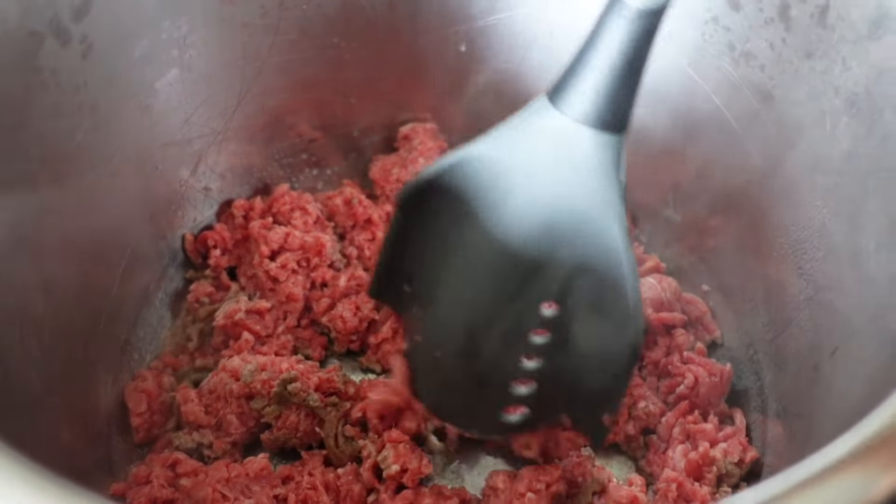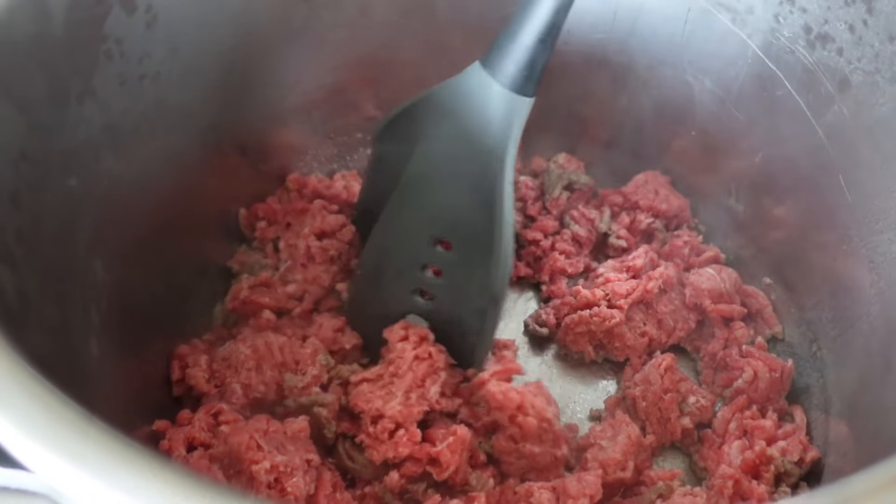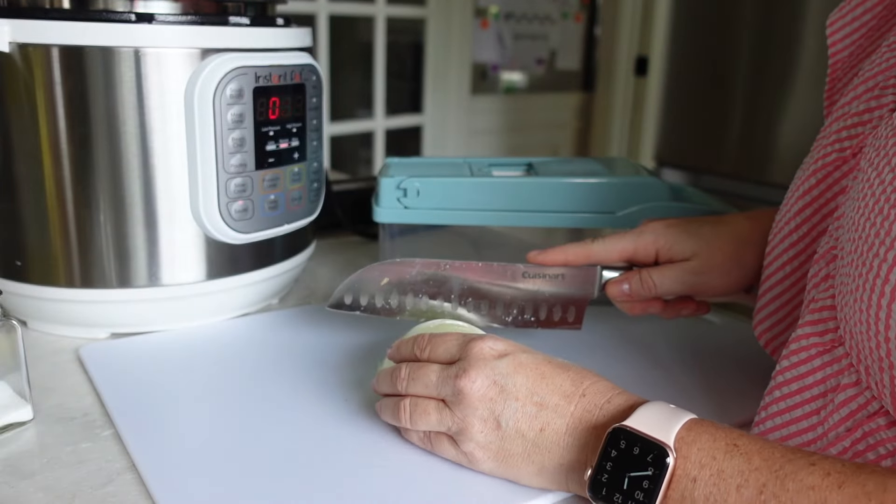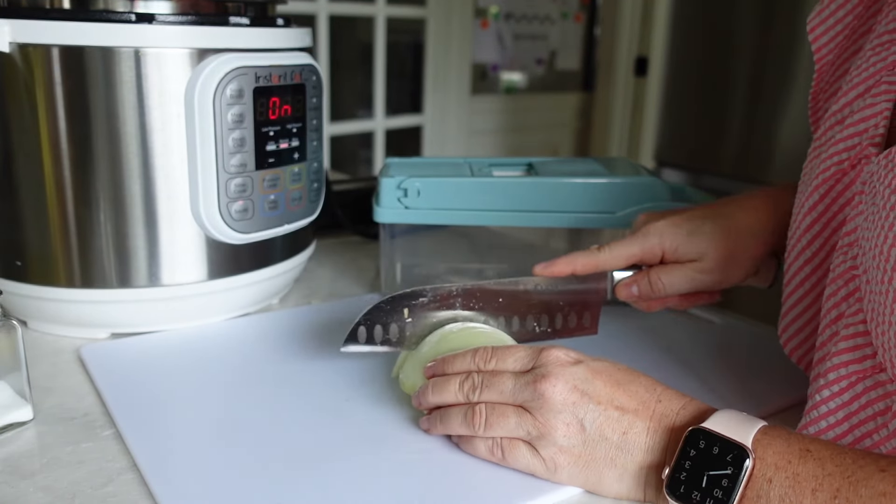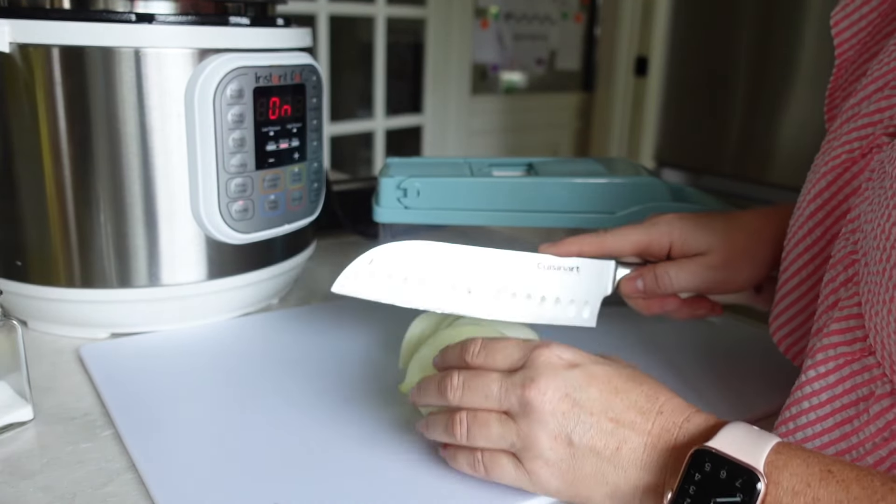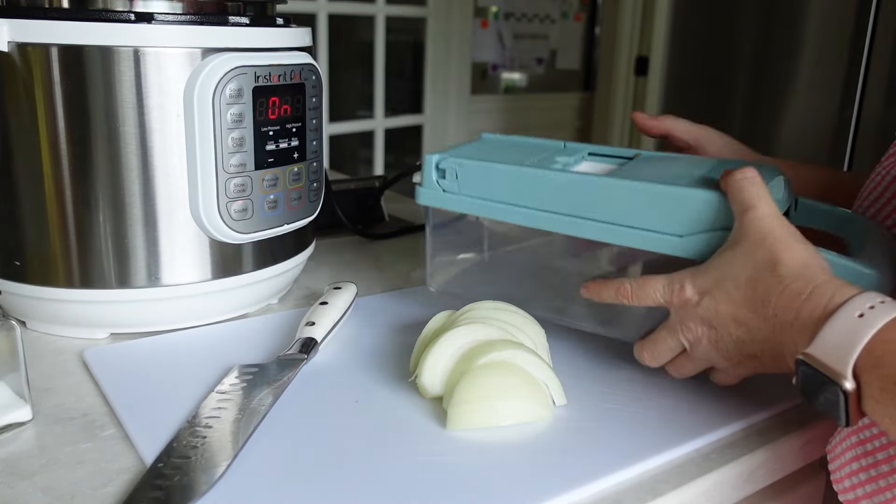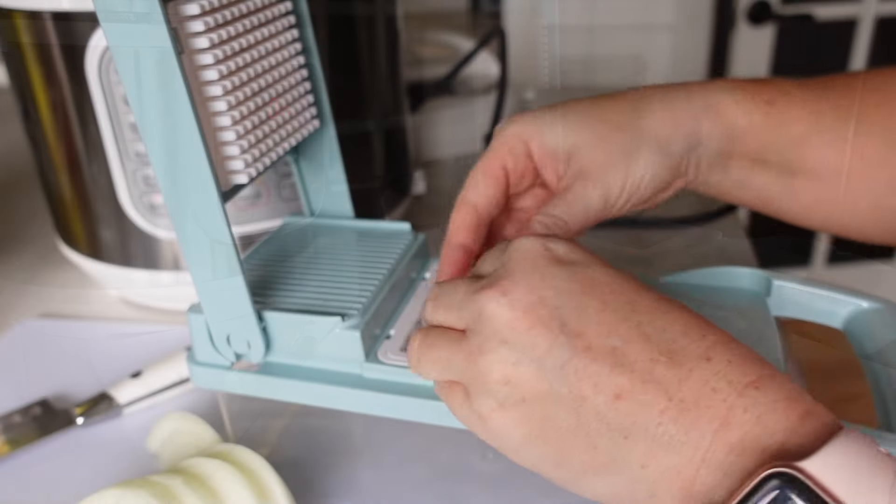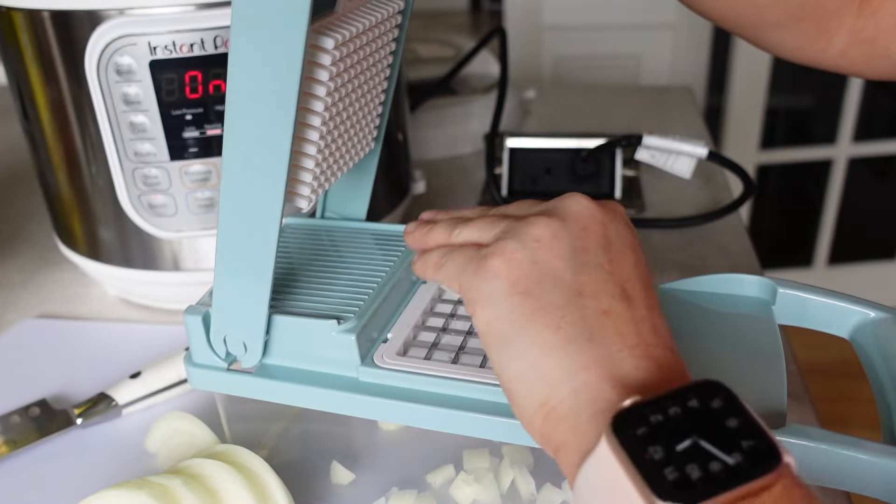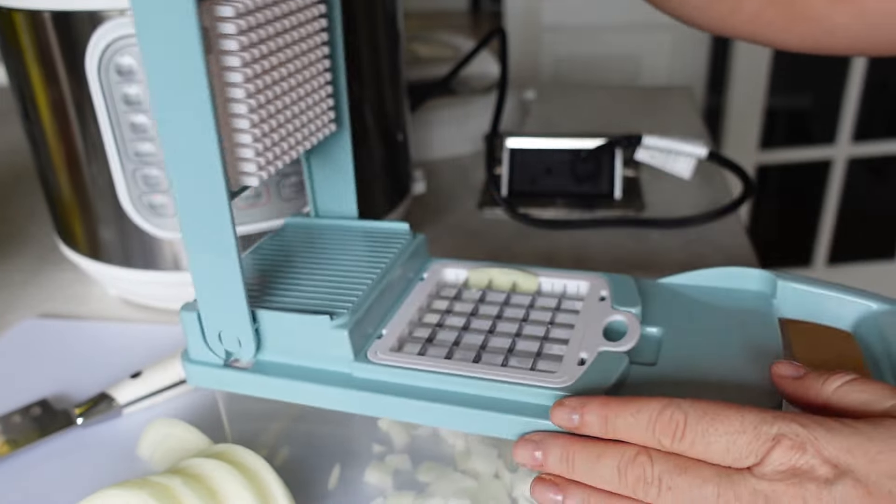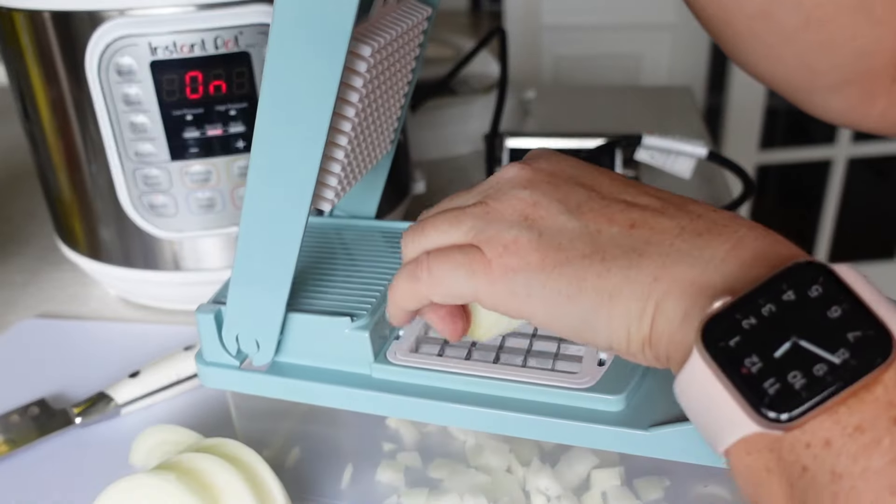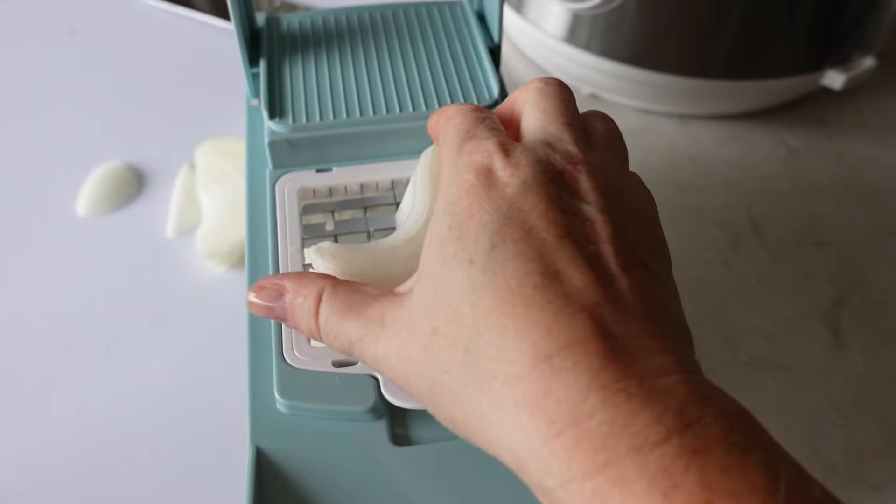While it's cooking we're going to start dicing our onion. I'm only using half of an onion because it was very big and I'm just slicing the onion and then I'm going to chop it in my little vegetable chopper that I got off of Amazon and it's so handy to use this little thing.